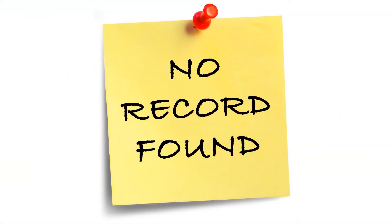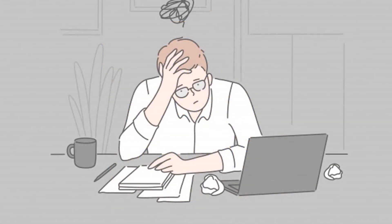In many instances, researchers may find that no list of units in a population is available. For example, no one keeps a record of all unenrolled students in a city. Many researchers produce disappointing results because they use available population frames without investigating the methods used to compile them and without ascertaining whether all members of the population were included. Sometimes they select unit lists that are outdated, contain inaccuracies or duplications, or do not adequately represent the population.